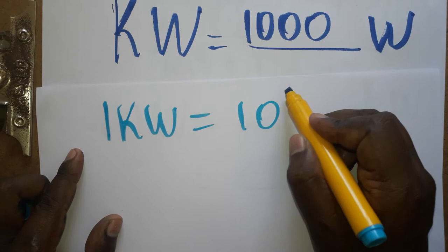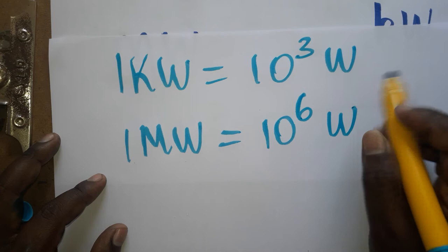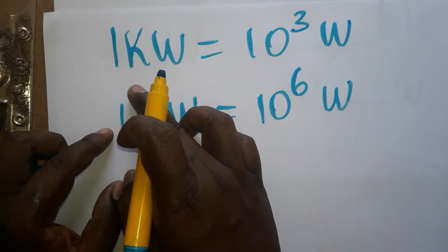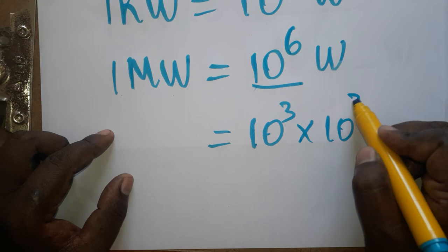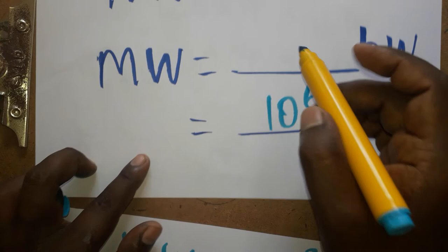1 megawatt — mega is a prefix word representing 10 power 6. So 1 megawatt is equal to 10 power 6 watt. Now, 1 megawatt is how many kilowatt? Since kilowatt is 10 power 3, we write 10 power 6 as 10 power 3 into 10 power 3 watt. Since 10 power 3 watt equals 1 kilowatt, 1 megawatt is equal to 10 power 3 kilowatt.